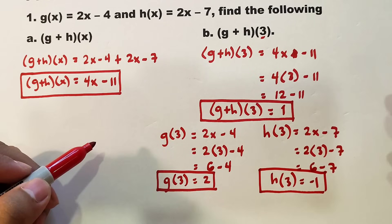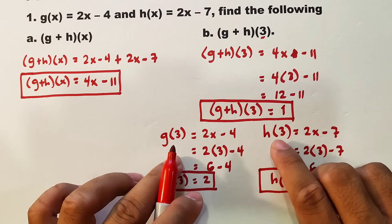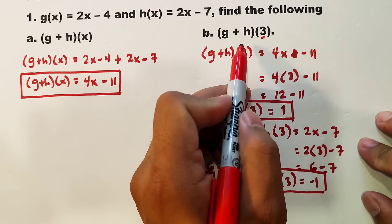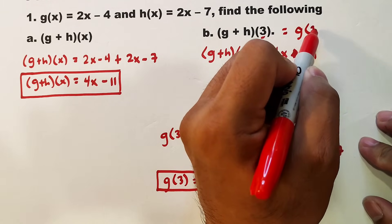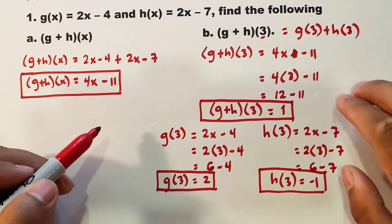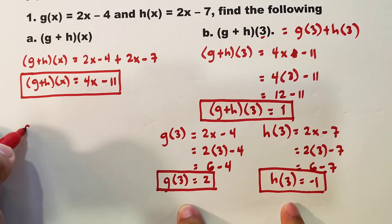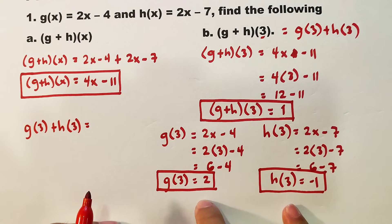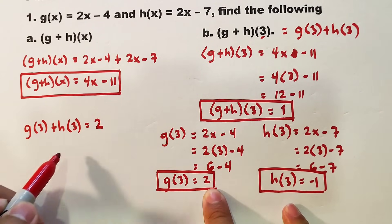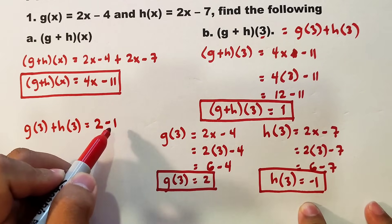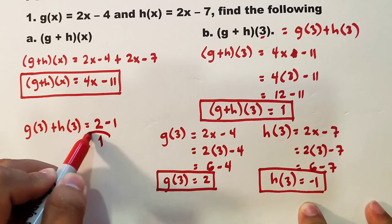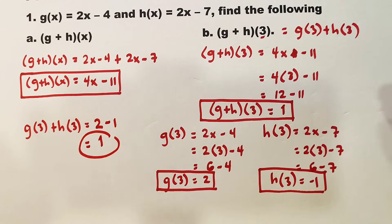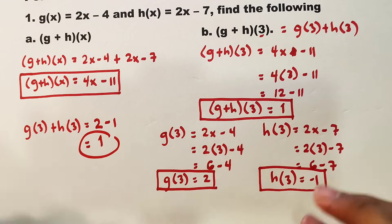Now it seems like we have a different answer, but we're not yet done. We still need to add g(3) and h(3) because (g + h)(3) is also equal to g(3) + h(3). So we have g(3) + h(3) = 2 + (-1) = 1. If you compare, we have the same answer using the two different methods. So if your input is a number, you can use these two methods.